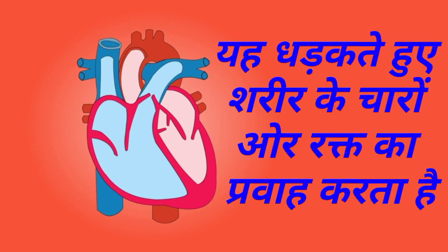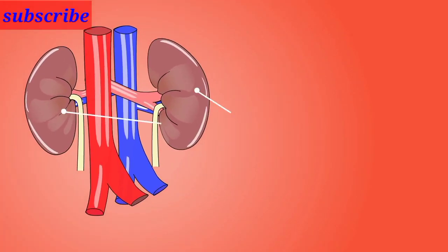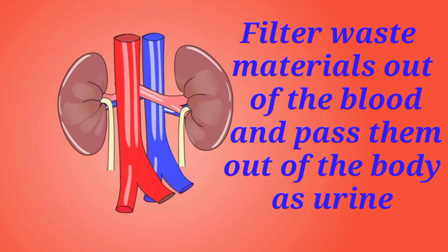The kidneys filter waste materials out of the blood and pass them out of the body as urine.